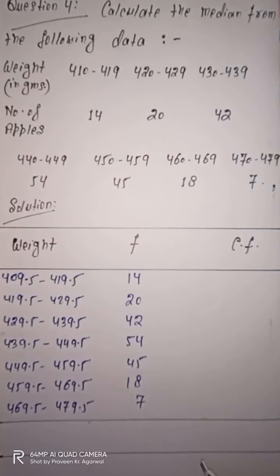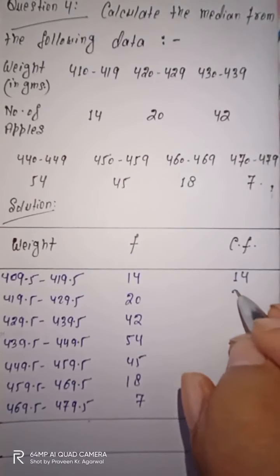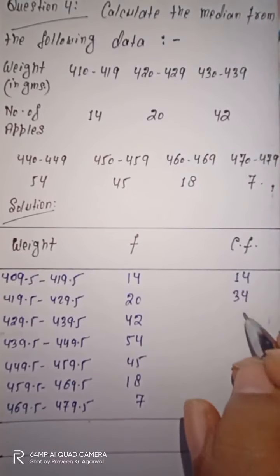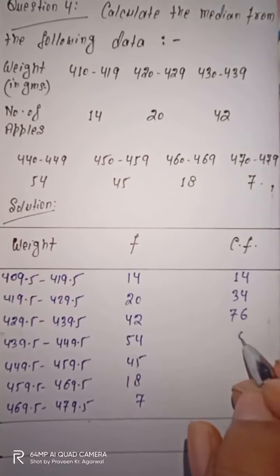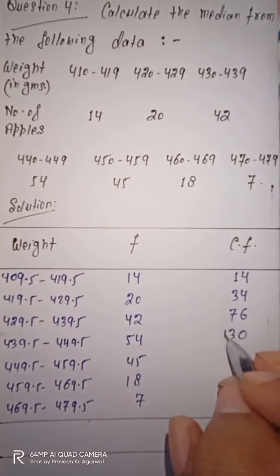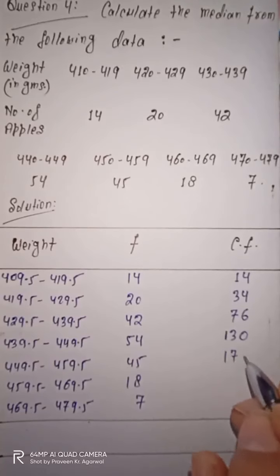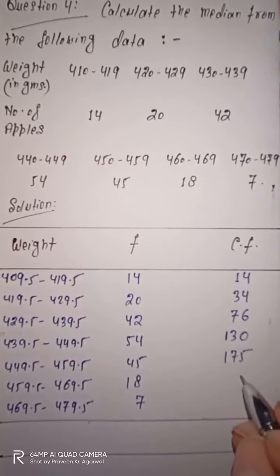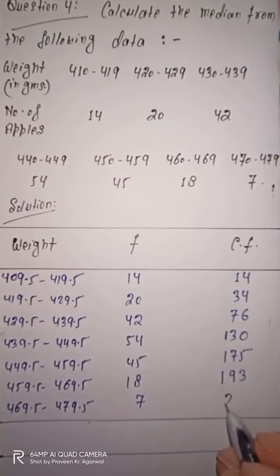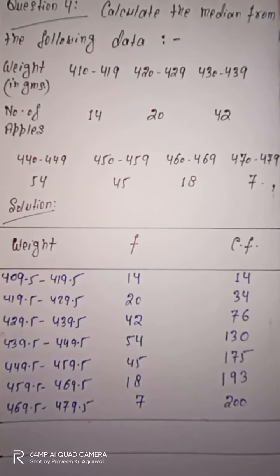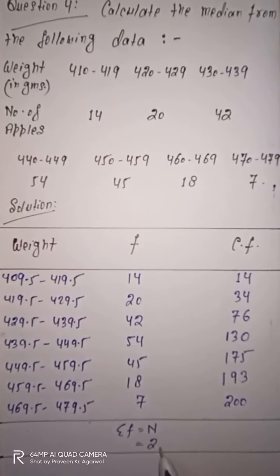The frequencies are given as: 14, 20, 42, 54, 45, 18, and 7. Now we calculate the cumulative frequency: 14, then 14+20=34, then 34+42=76, then 76+54=130, then 130+45=175, then 175+18=193, then 193+7=200. So the total summation of f, that is N, equals 200.